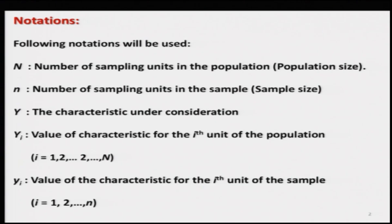Before that, let us quickly have a review of the symbols and notations, and I would also try to address the meanings and interpretation of these symbols. We are going to use capital N, which as we had discussed earlier indicates the population size — the total number of sampling units in the population. Similarly, small n is our sample size, which is the total number of sampling units in the sample.